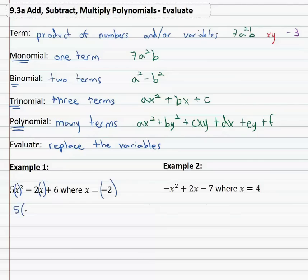So we have 5x or 5 times negative 2 squared minus 2x, 2 times negative 2 plus 6. Also notice as I make this substitution, as I replace these variables, they must be put in parenthesis.